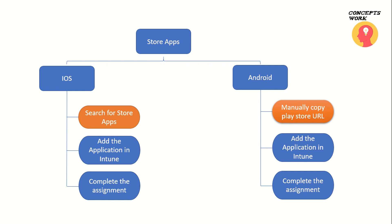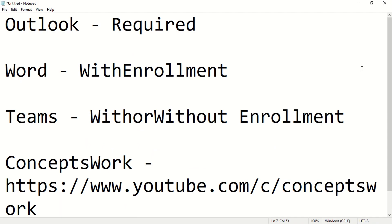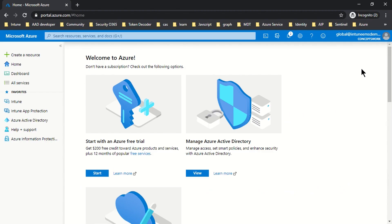Now I'm going to switch to my browser where I'll do all the configuration and walk you through the settings needed so the respective application can be available on the Company Portal app. I'm logged into portal.azure.com where we'll be making all the changes. Here's the plan: we'll add Outlook as a Required assignment type, Word as Available for Enrolled Devices, Teams as Available With or Without Enrollment, and finally a web link deployed as an application to the device.